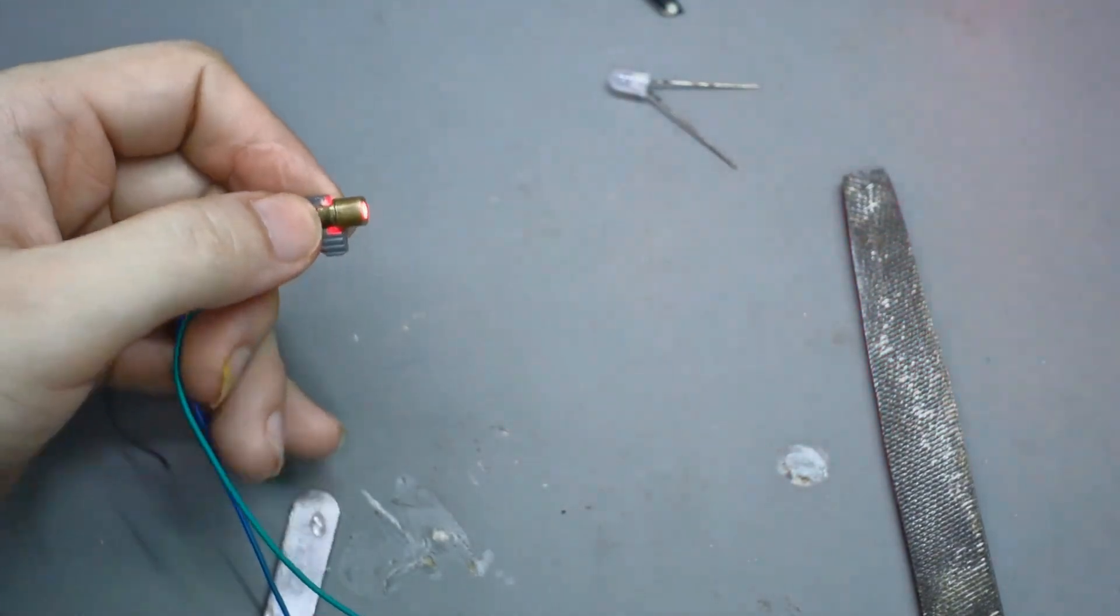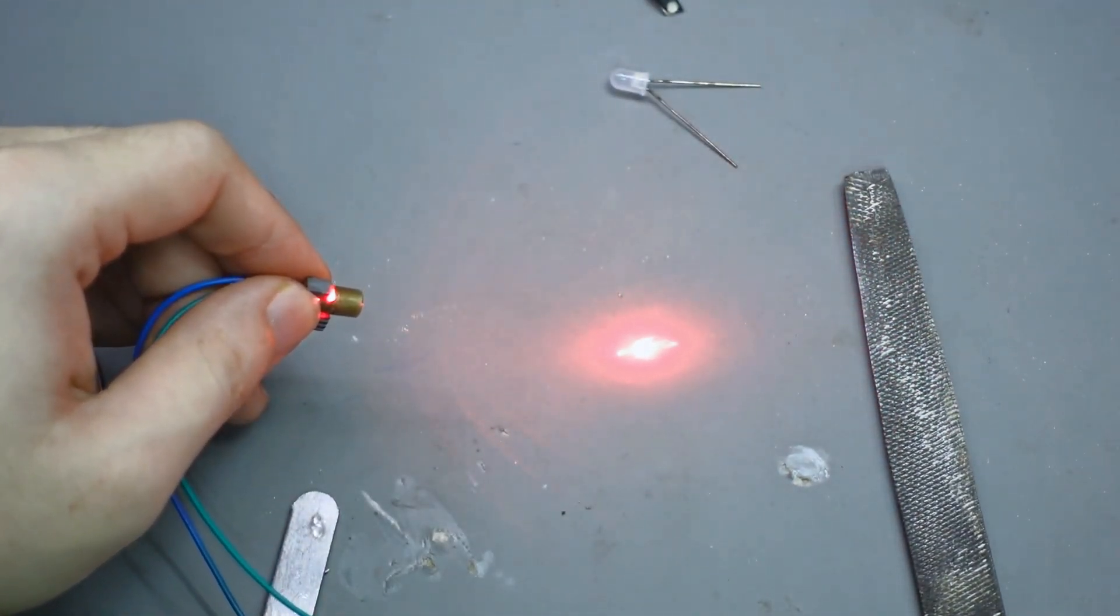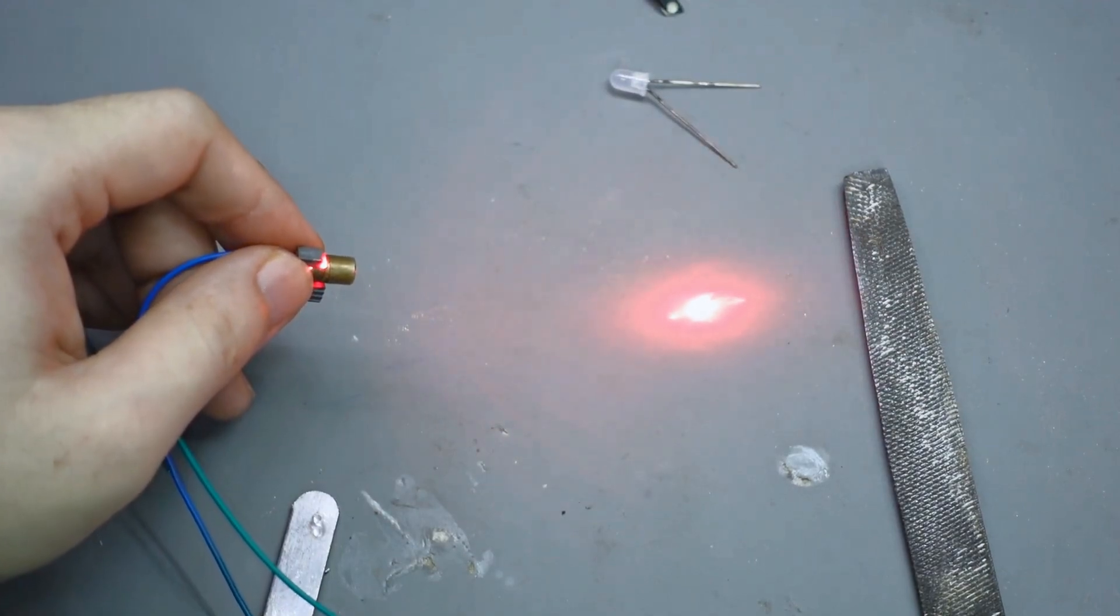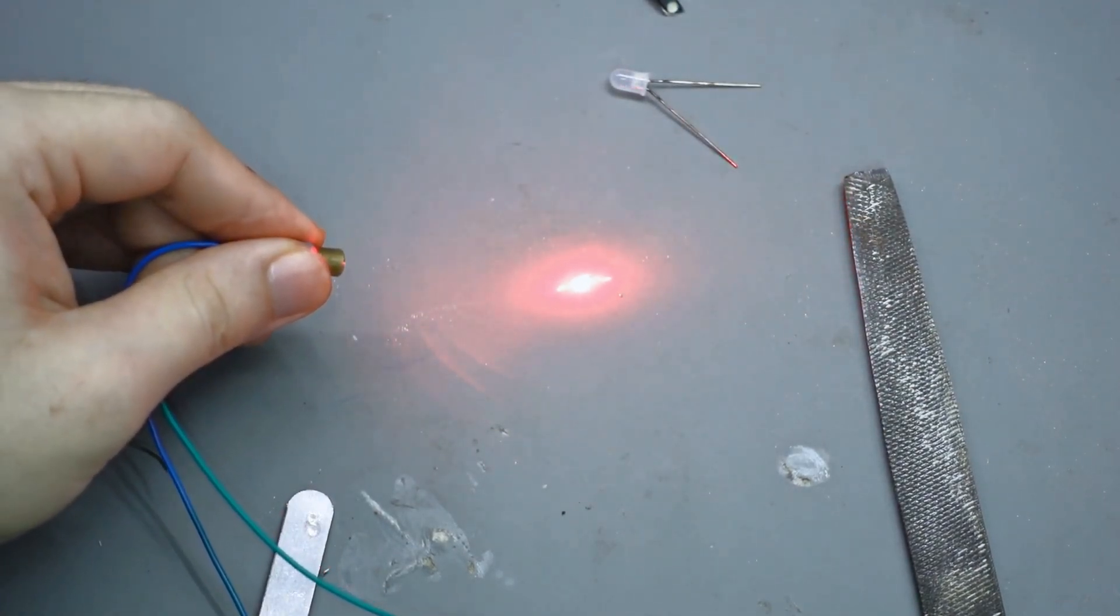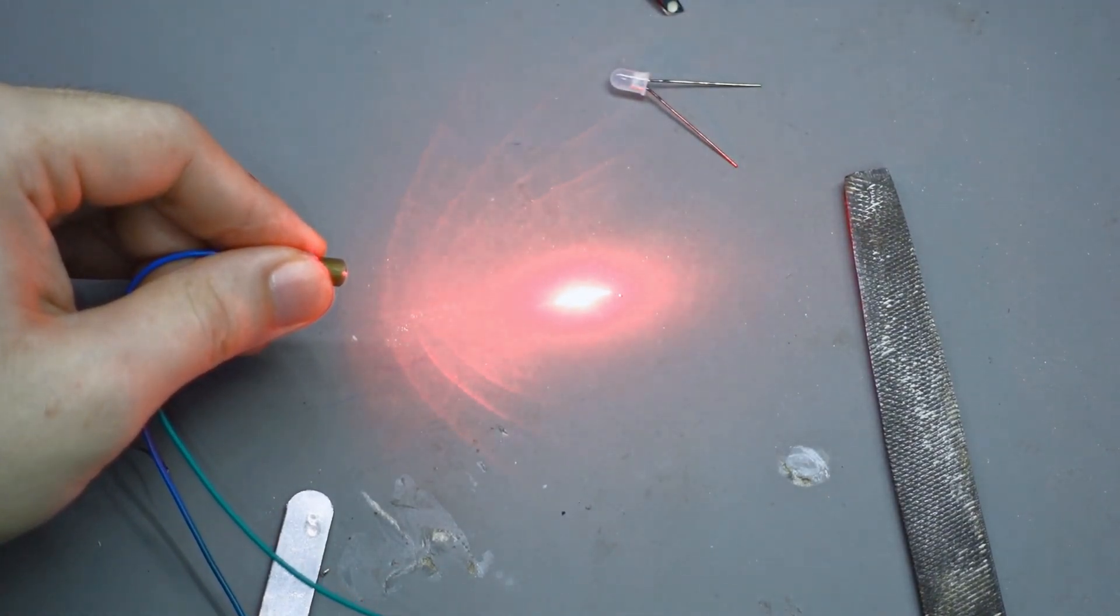Since there's no cooling system installed yet, I have to keep the power low to prevent overheating. If I were to run it at full power without any heat dissipation, the diode would get extremely hot very quickly. Without proper cooling, it could burn out immediately. So it's really important to be careful with this part, guys.